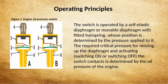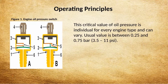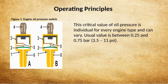The switch is operated by a self-elastic diaphragm, or a movable diaphragm with a fitted hairspring, whose position is determined by the pressure applied to it. The required critical pressure for moving the diaphragm and activating — switching on or off — the switch contacts is determined by the engine oil pressure. This critical value is individual for every engine type and can vary; the usual value is between 0.25 and 0.75 bar.